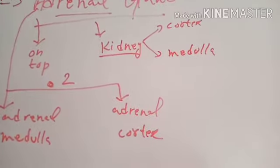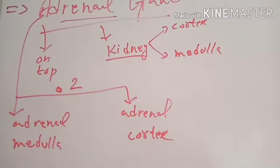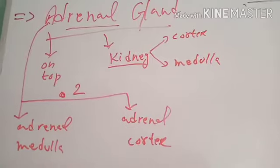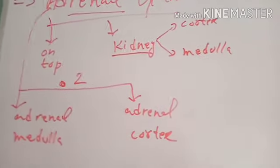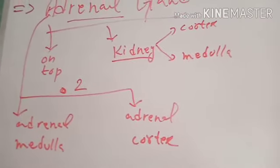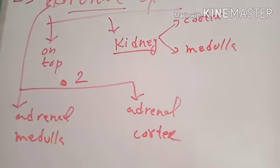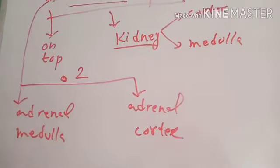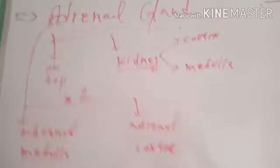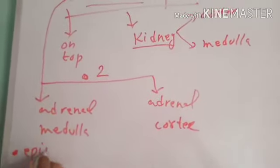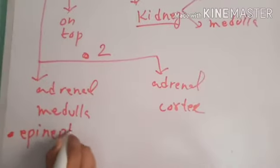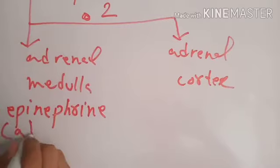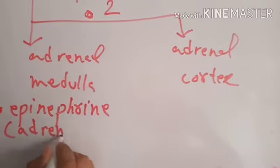The hormones which are produced by adrenal medulla are two. Adrenal medulla produces two hormones, but in your book just one hormone of adrenal medulla is mentioned. This hormone of adrenal medulla is epinephrine, which is also called adrenaline.